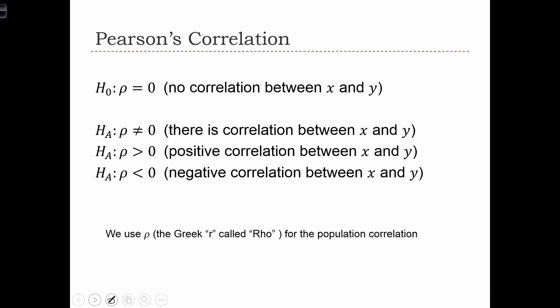The null hypothesis when conducting an inferential test is that rho equals 0. This is the Greek letter rho, which denotes the population correlation - the correlation that exists in the population data. The null hypothesis states that in the population, the two variables are independent with no correlation, no relationship between x and y.